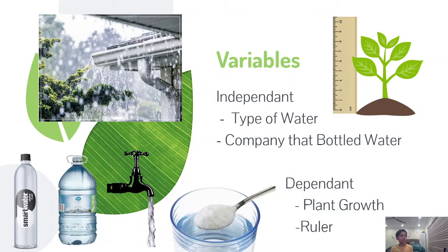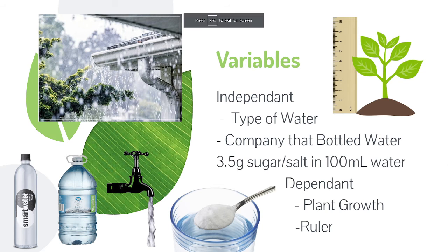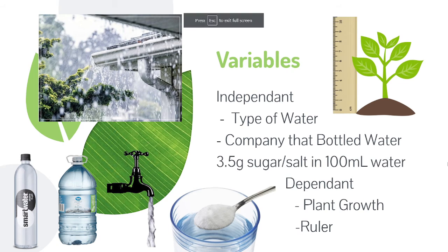These are the variables. The independent variable is the one I controlled, which is the type of water. I ensured the water quality by trusting the city and the company for water quality. The only thing I did was make the sugar and salt water myself.